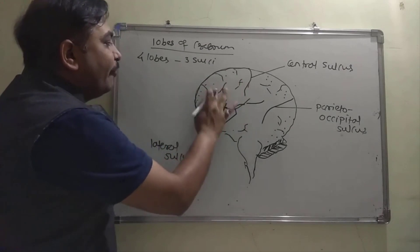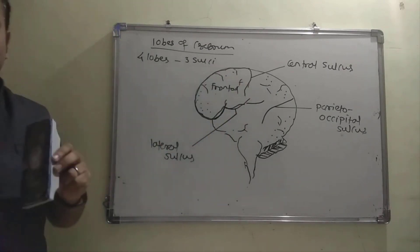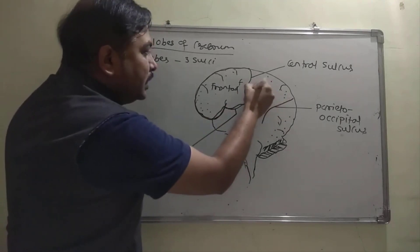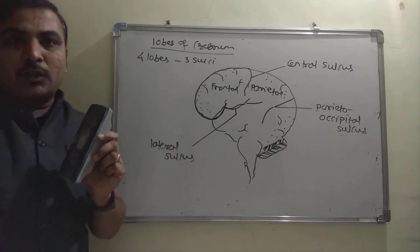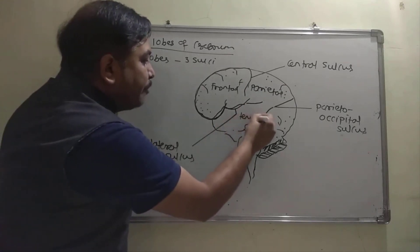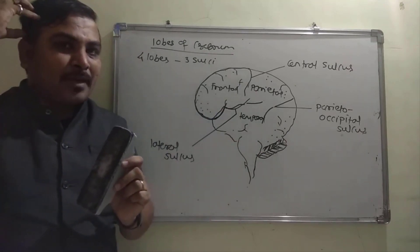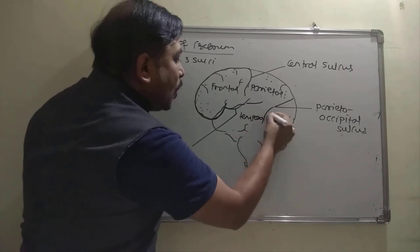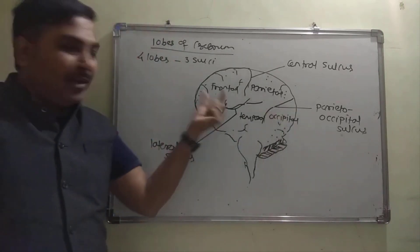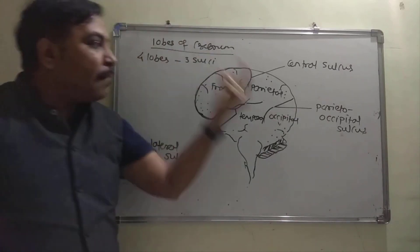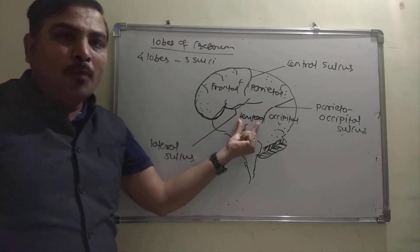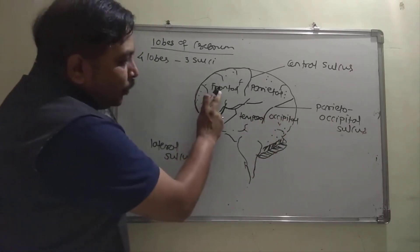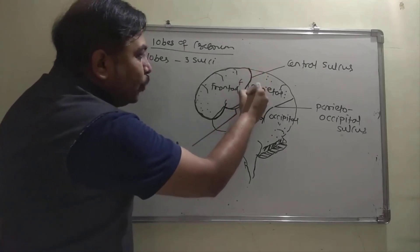The first lobe is the frontal lobe, present on the anterior (front) side. The second is the parietal lobe, present on the middle top of the brain. The third is the temporal lobe, present above the ears. The separation between the frontal and parietal lobe is called the central sulcus.